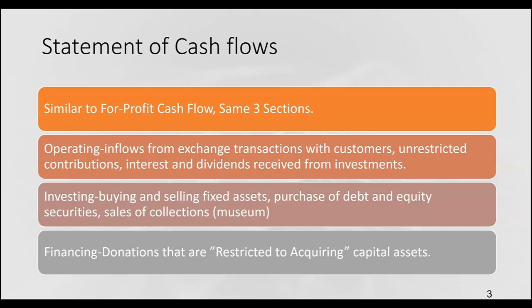The good news is the statement of cash flows for a not-for-profit is similar to a for-profit — same three sections: operating, investing, and financing. Not like the government cash flow statement for the enterprise fund, which had four sections. With not-for-profit, we're back to FASB, and the operating section will have inflows from exchange transactions with customers, unrestricted contributions, and donations.